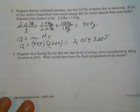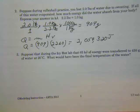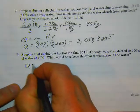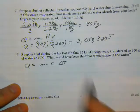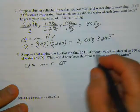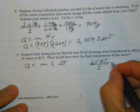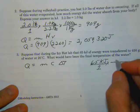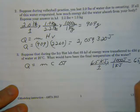Let's look at problem number three. Suppose that during the icy hot lab, 65 kilojoules of energy were transferred to 450 grams of water at 20 degrees. What would have been the final temperature? We're not doing a phase change here. We have 65 kilojoules, and we need to convert that to joules: 65 kilojoules over 1, and 1 kilojoule is 1,000 joules, giving us 65,000 joules.